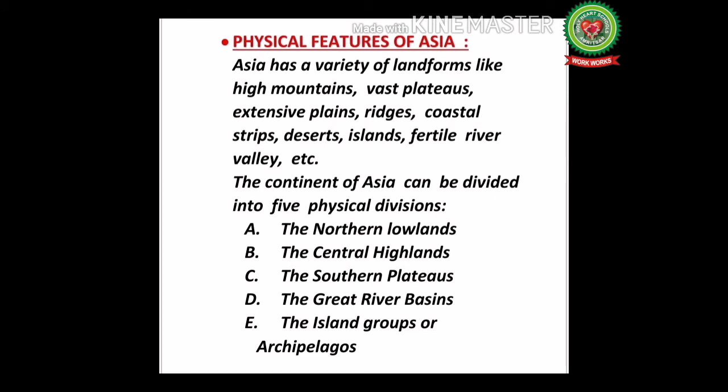Asia has a variety of landforms like high mountains, vast plateaus, extensive plains, ridges, coastal strips, deserts, islands, and fertile river valleys. The continent of Asia can be divided into five physical divisions: the northern lowlands, the central highlands, the southern plateaus, the great river basins, and the island groups or archipelagos.